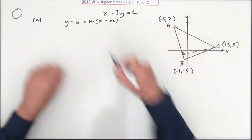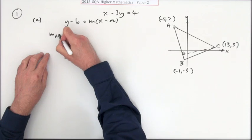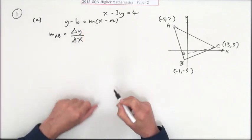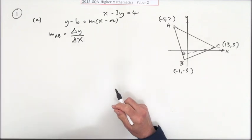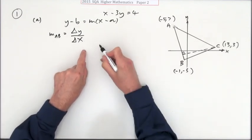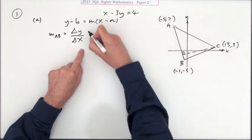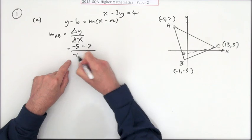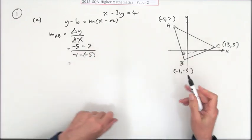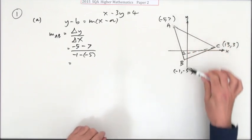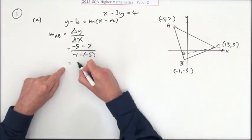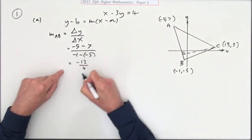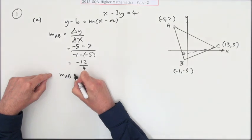What's the gradient of the line AB? That'll be the difference in the y coordinates over the difference in the x coordinates. You can write y₂ minus y₁ over x₂ minus x₁. Going from A to B, so I'll go from negative 5 take away 7 over negative 1 take away negative 5, or you can do the other way around as long as you're consistent. That's negative 12 over 4. So the gradient of AB is negative 3.